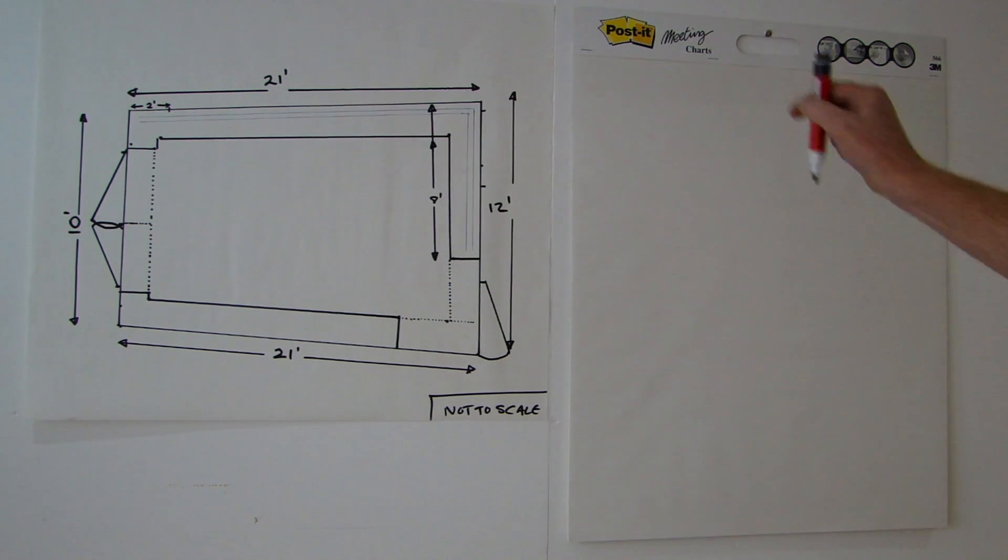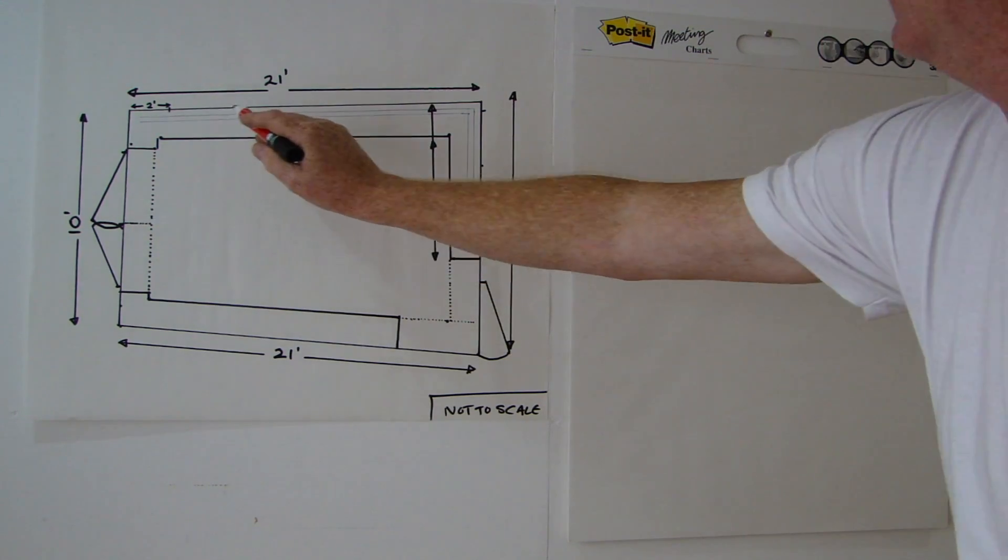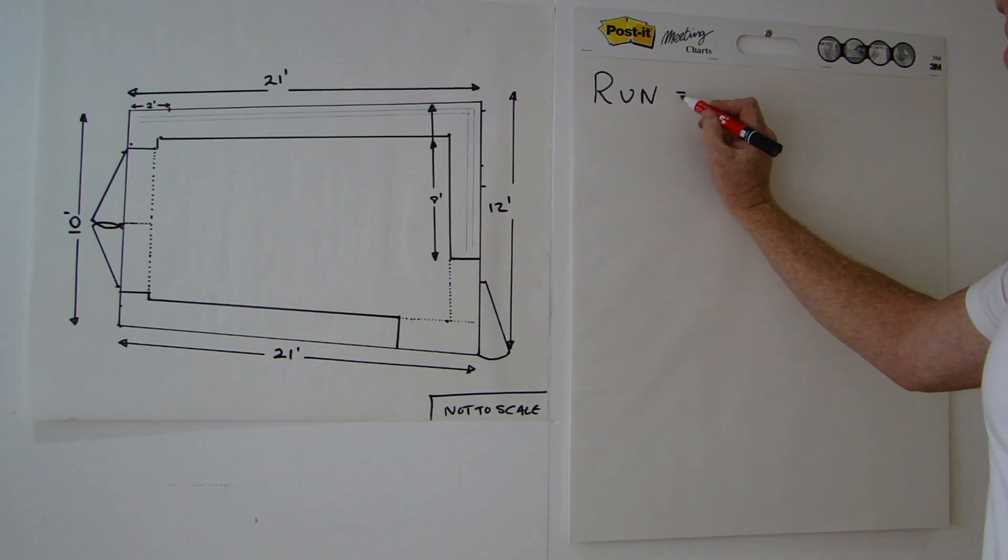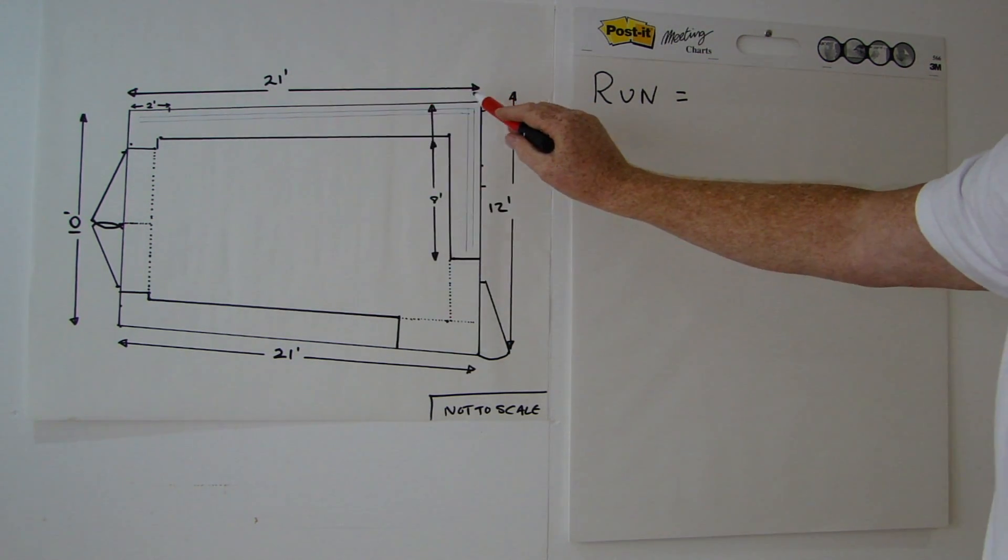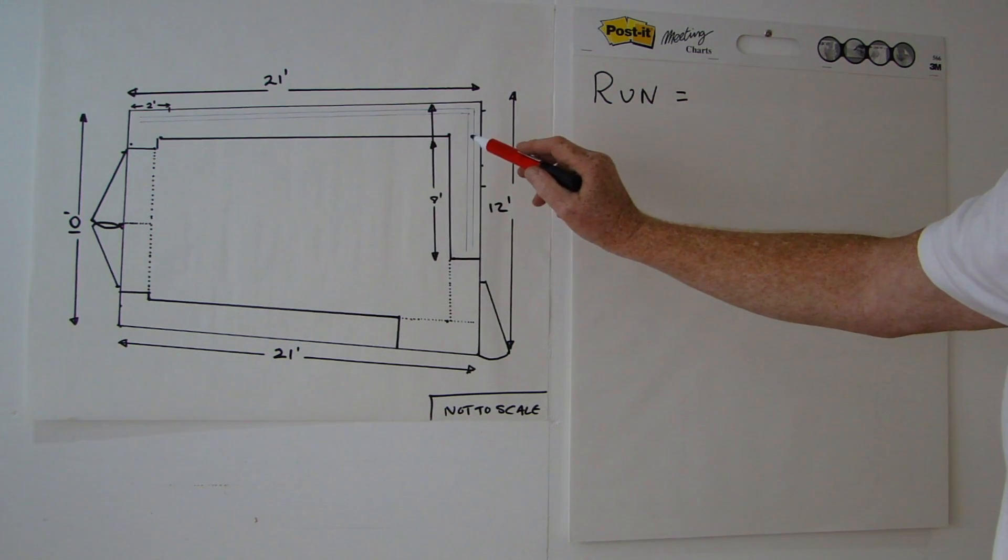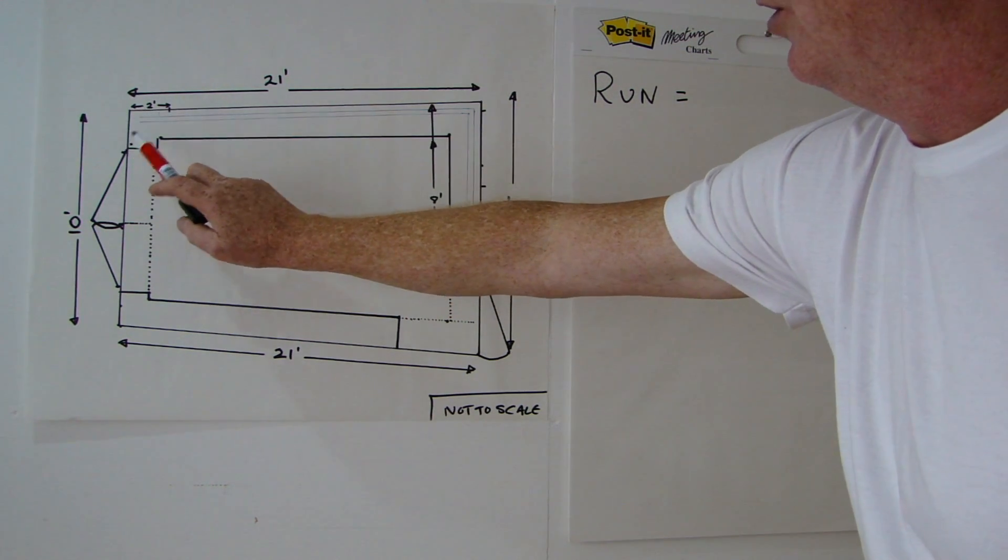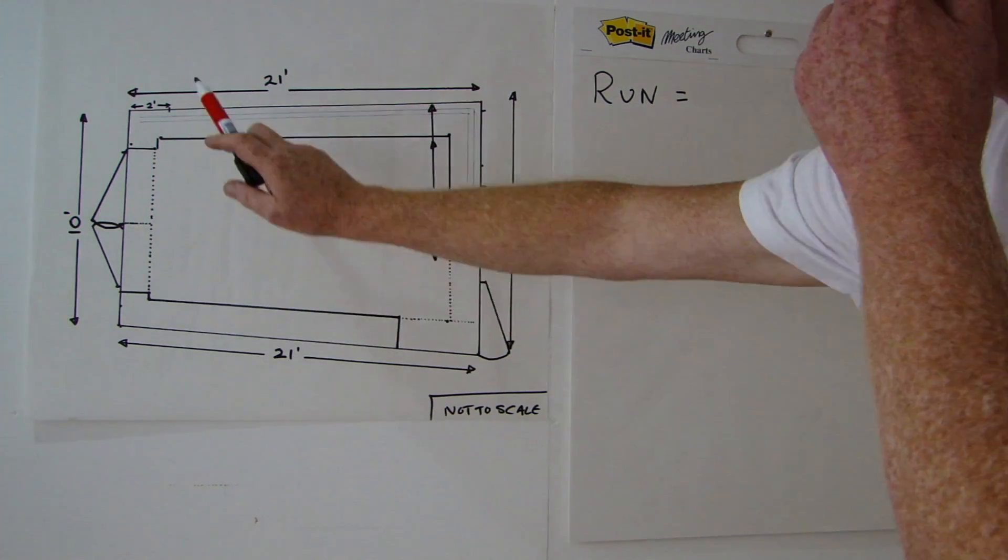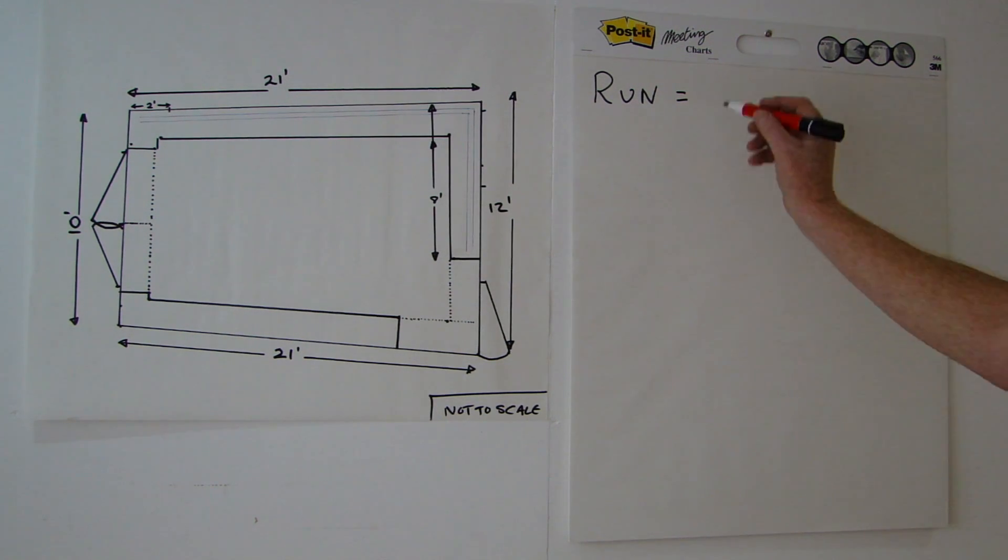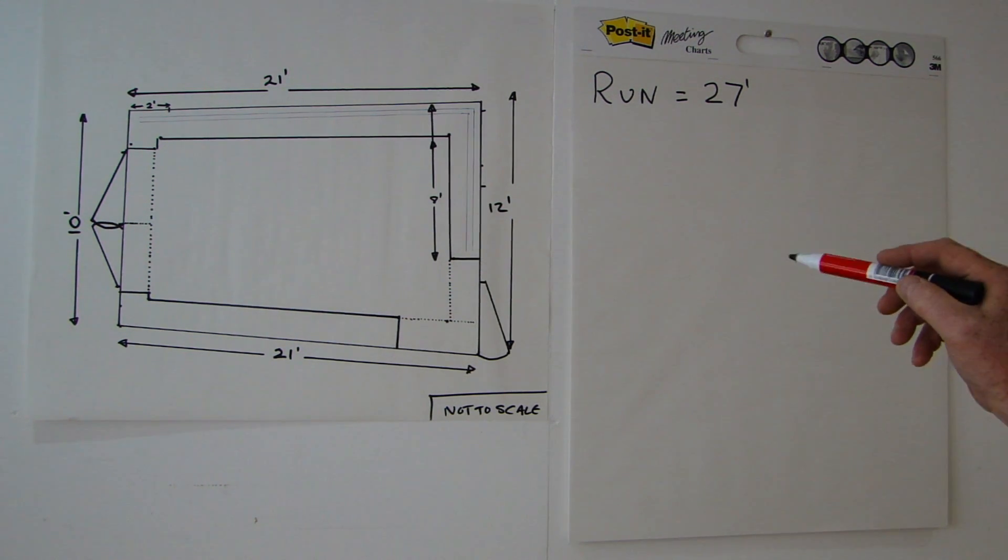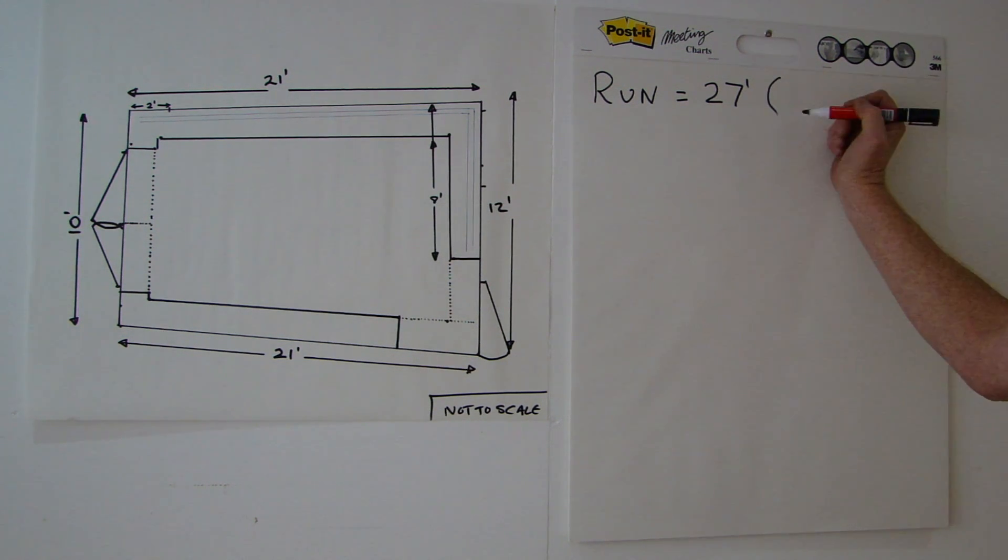How do we calculate what the slope will be? The first thing we need to know is the run, which is the length. We have 21 feet along this section and 8 feet down there. That makes 29 feet, but I need to deduct two feet from this corner because the inclines will be going on a curve. That gives us 27 feet, which is 324 inches.